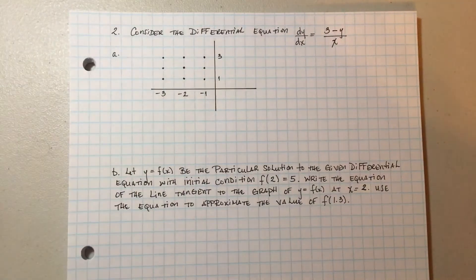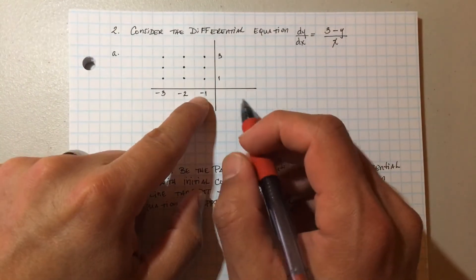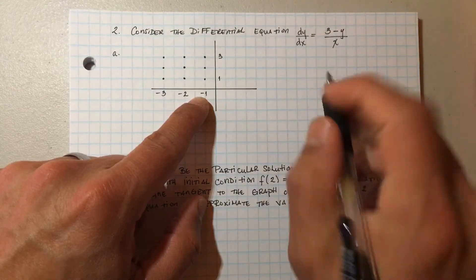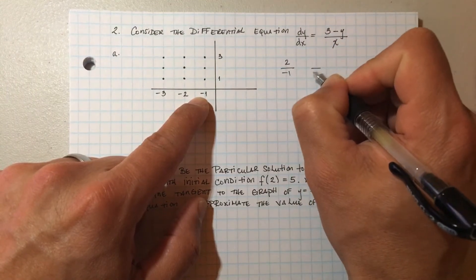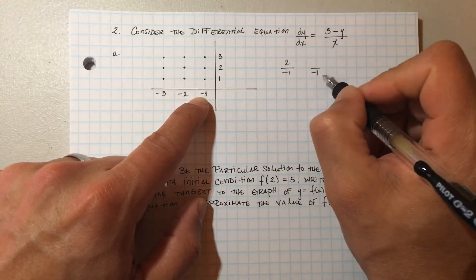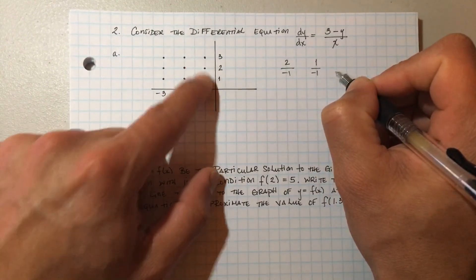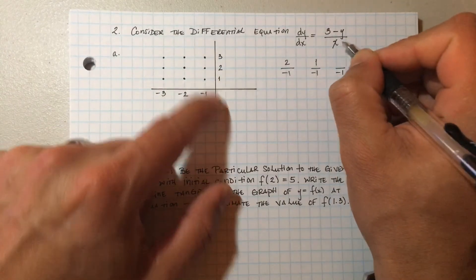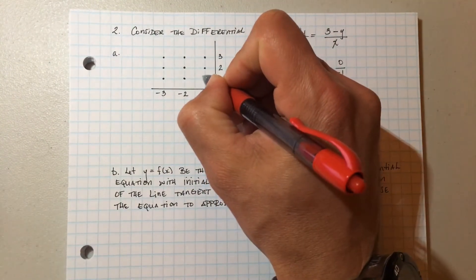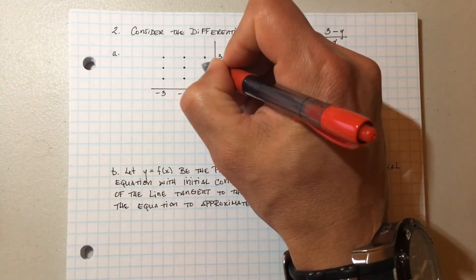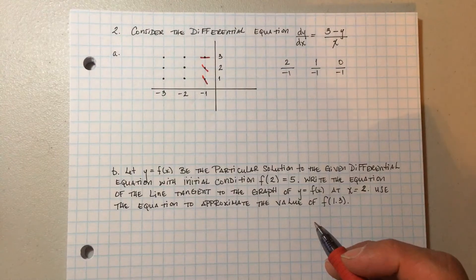Let's do another example — this time with negatives. For the point (-1, 1): x = -1, y = 1, so 3 - 1 = 2 divided by -1. For (-1, 2): 3 - 2 = 1 divided by -1. For (-1, 3): 3 - 3 = 0. The first slope is -2, steeply downward; the second is -1; and the third is 0, giving a horizontal tangent.